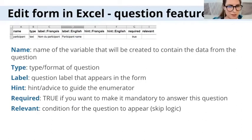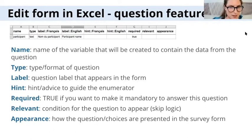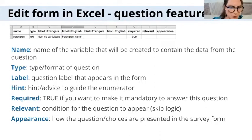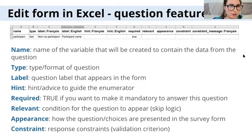'Relevant' is the condition for the question to appear — what Diane described as skip logic earlier. 'Appearance' is how the question or the response choices are going to be displayed in the survey form. And 'constraint' is the validation criteria that Diane talked about earlier.